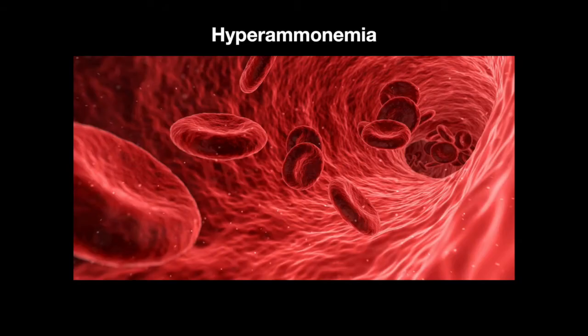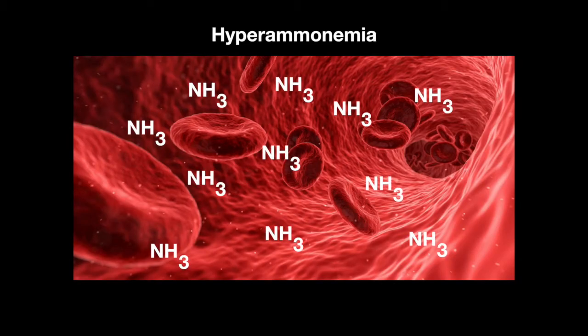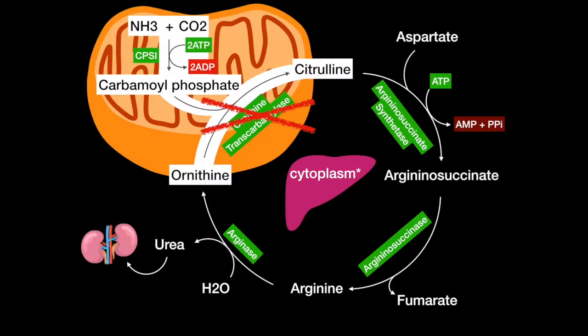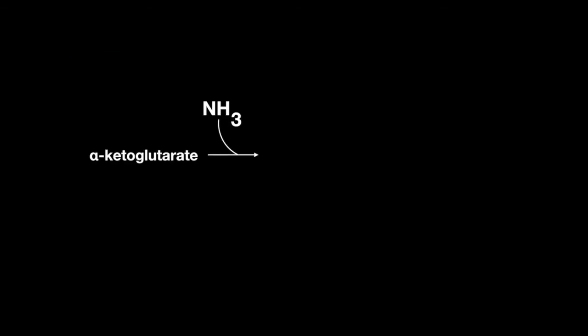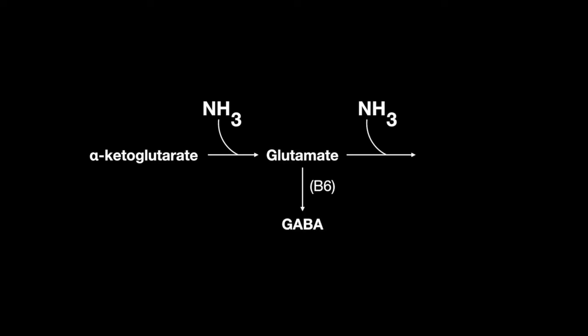Hyperammonemia is a condition in which there is too much ammonia in the blood. Causes include liver disease or enzyme deficiencies in the urea cycle, meaning ammonia cannot be turned into urea to be excreted and continues to flow through the bloodstream. Alpha-ketoglutarate can accept one ammonia molecule, becoming glutamate, which can then become GABA via B6, or can accept yet another ammonia, becoming glutamine.